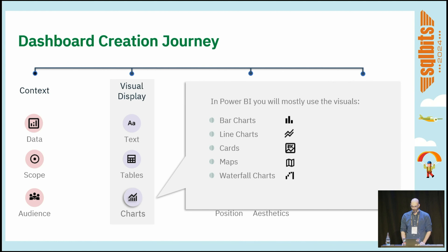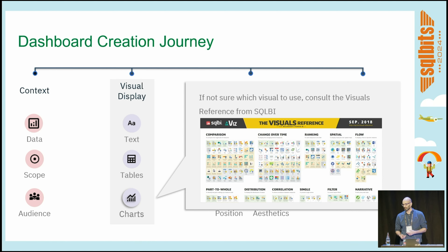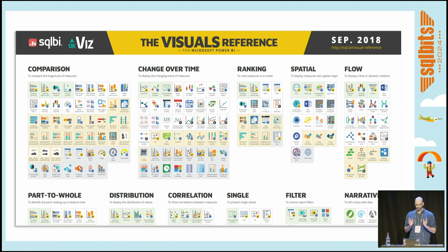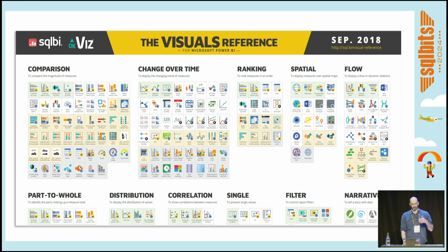Talking about charts: out of the box, Power BI has a lot. Five types — bar charts, line charts, cards, maps, and waterfall charts — are more than sufficient to create nice data storytelling. There are more we can import, but if we're unsure what to use for a given case, the SQL BI guys created a very nice visual map from 2018 — it's still valid. They group everything by use case: comparison, change over time, ranking. Those with a green background are optimally used, and those with a red background are not so optimal.